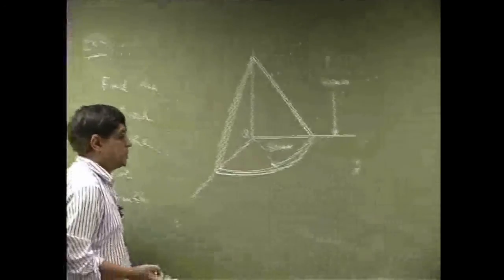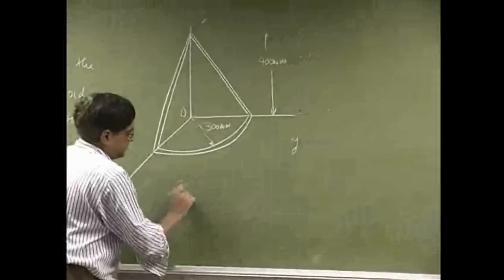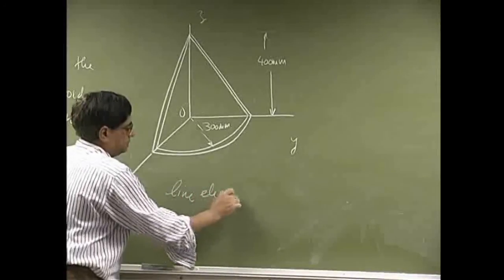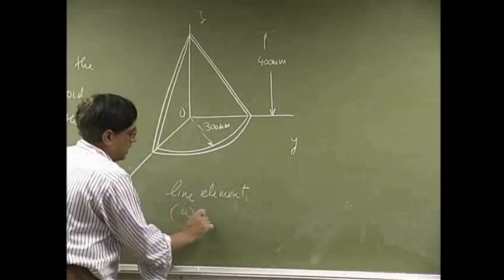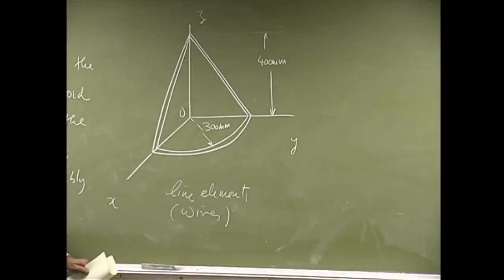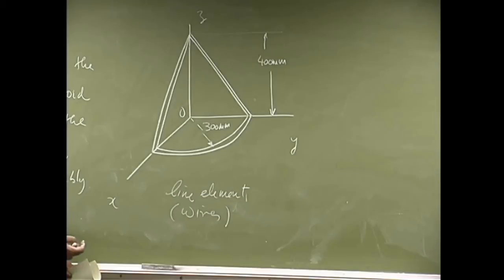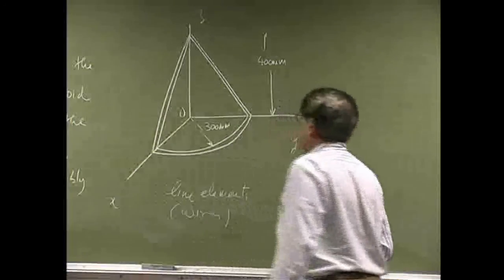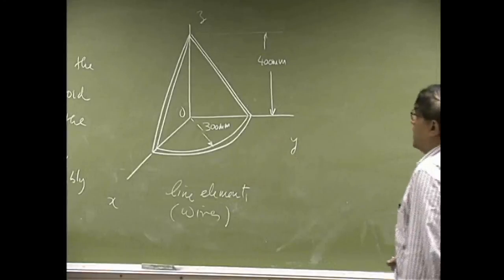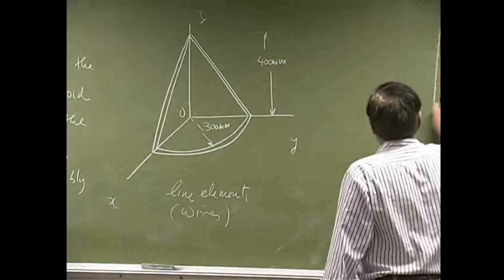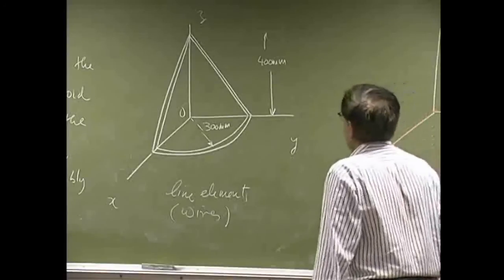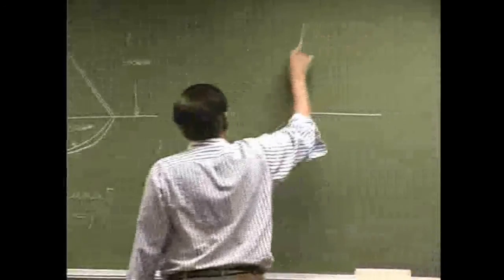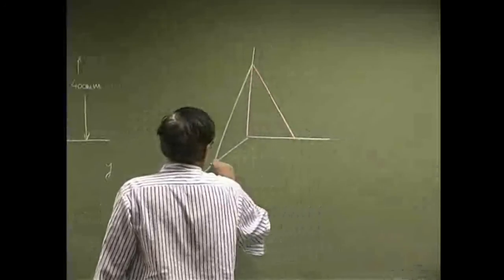The first thing we notice is that the components here are what we call line elements, or wires where the predominant characteristic is the area cross-section, or in this particular case, it's going to be the length. So you use the length as the main defining characteristic. Now, I can look at this problem by looking at different components.